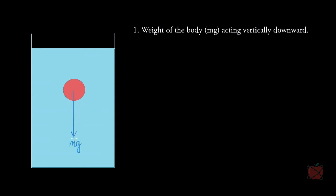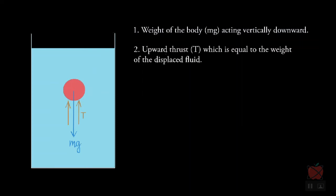The weight of the body acts from the center of gravity and equals mg. That is the first force acting on the body. The second force is the upward thrust T, which is equal to the weight of the displaced fluid. Whenever a body is immersed in a liquid, there will be a thrust acting upward which pushes the body up.